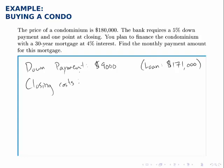Closing costs are an administrative fee that the bank charges at the time of the loan. That one point at closing means 1% — each point is one percentage point. It's 1% not of the cost of the condo, but of the loan amount, because the loan is really all that the bank sees. So one point at closing is 1% of $171,000, which is $1,710. That's just a fee you pay during the process of taking out this loan — it doesn't reduce the loan amount at all.